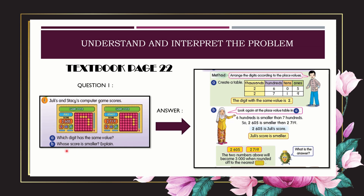Now the next question: whose score is smaller? Look again at the place values. In the hundreds place, 600 is smaller than 700. So 2,605 is smaller than 2,790. The answer is Julie's score is smaller because Julie's score is 2,605.